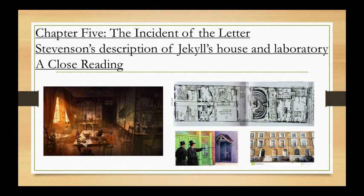Before we start, I think it's significant to talk about Jekyll's house and how it's been presented so far. We know that in Chapter 1, the Story of the Door, the door actually referred to is the rear door to Jekyll's house. And I spoke in that lesson about how I believe the house is modelled on the townhouse of the celebrated Victorian anatomist and dissector John Hunter. As you can see in the floor plan on your screens, John Hunter's house had two separate wings.